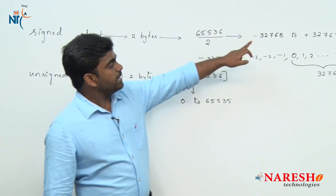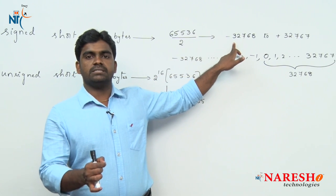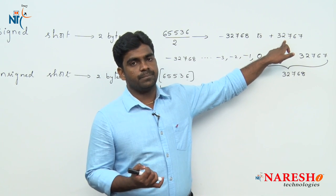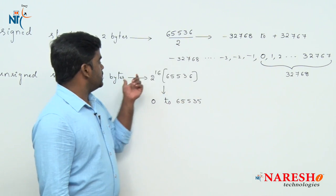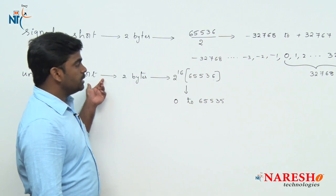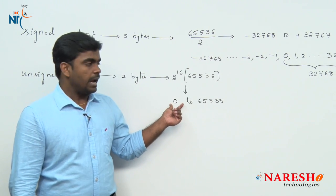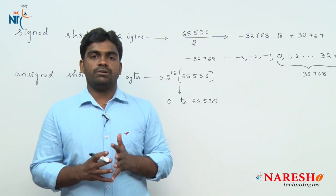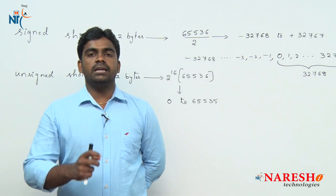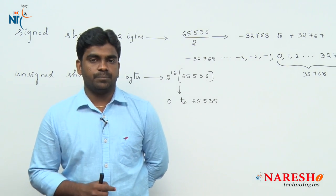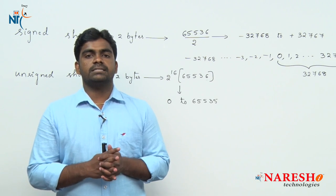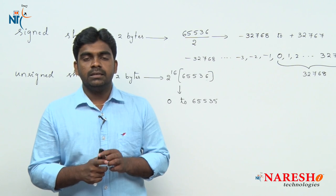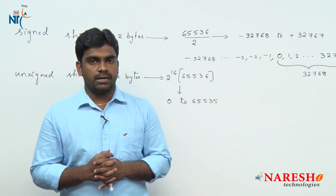So, using signed data type, the minimum value we can store is minus 32768, and using unsigned, the minimum is 0 and maximum is 65535. These are the limits of the short data type. Next, we discuss how many ways we can declare the short data type and the format specifiers.